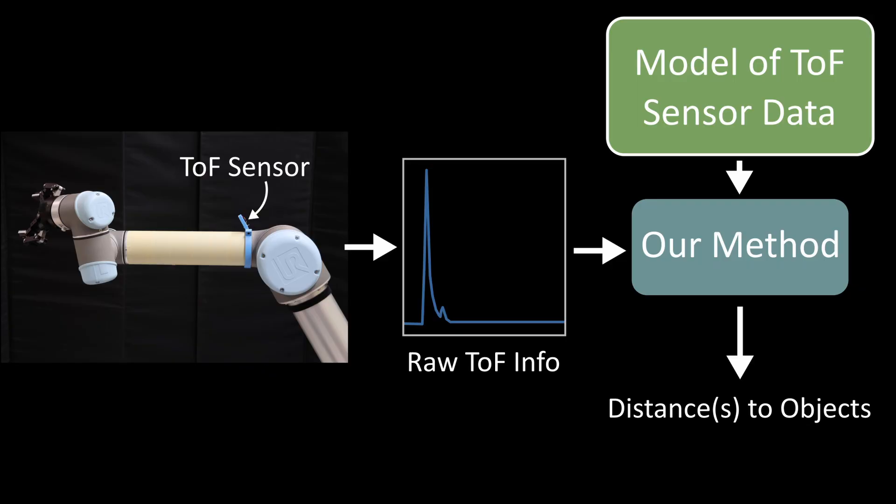At runtime, we use this model to detect deviations in the raw time-of-flight measurements, which correspond to unknown objects.